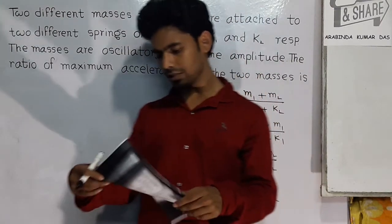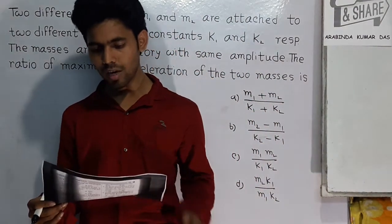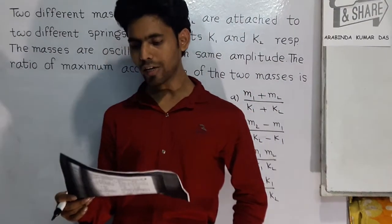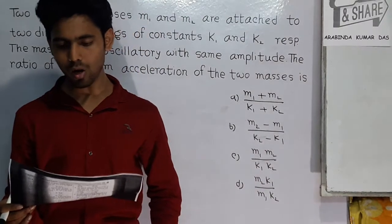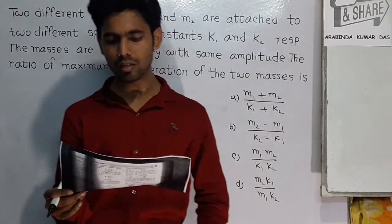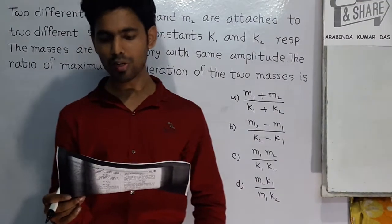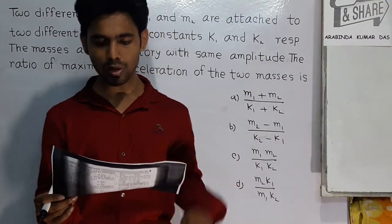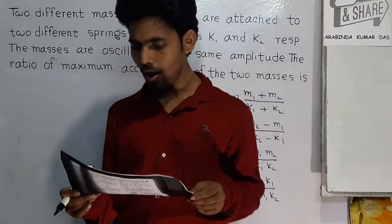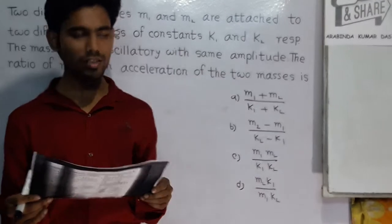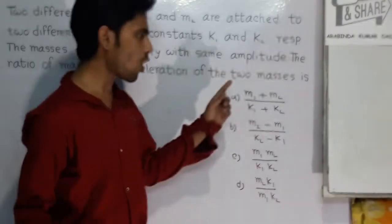Today's problem is: two different masses M1 and M2 are attached to two different springs of constant K1 and K2 respectively. The masses are oscillating with the same amplitude. The ratio of maximum acceleration of the two masses is given with 4 options.